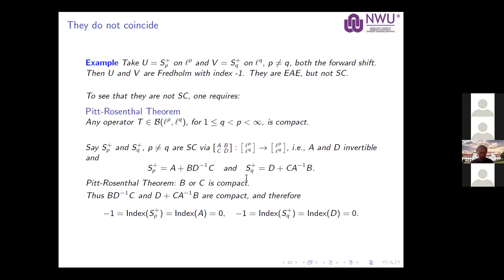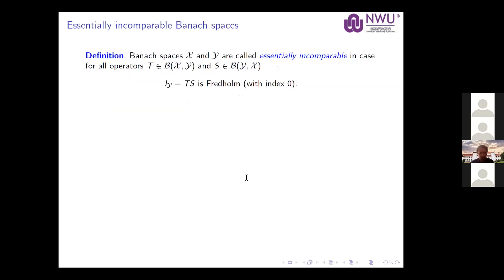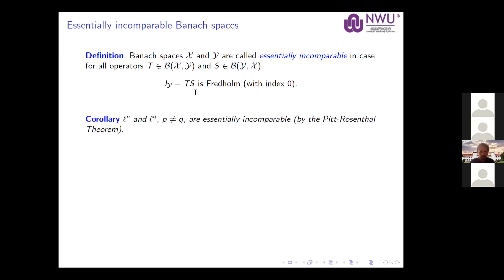We can push this further by looking at essentially incomparable Banach spaces. Two Banach spaces are called essentially incomparable if for all operators T from X to Y and S from Y to X, the operator I − TS is Fredholm with index zero. The Pitt-Rosenthal theorem tells us that L^p and L^q are essentially incomparable. Other examples include L^p and c_0, certain Lorentz sequence spaces, and Orlicz sequence spaces. Also, totally incomparable implies essentially incomparable.